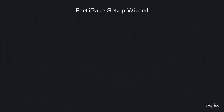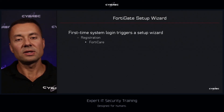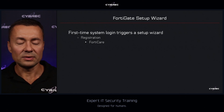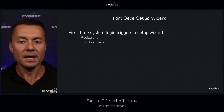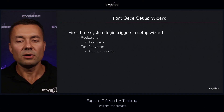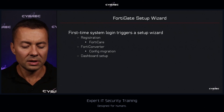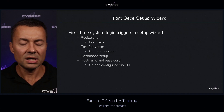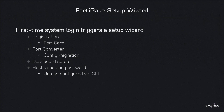When you connect to the FortiGate for the first time, this triggers what is known as the setup wizard. The setup wizard covers basic options: FortiNet wants you to register the device with your FortiCloud account so the system can download updates. You also have the ability to migrate an old configuration to a new device, customize the look and feel of dashboards and widgets, and set a new hostname and password unless already configured.